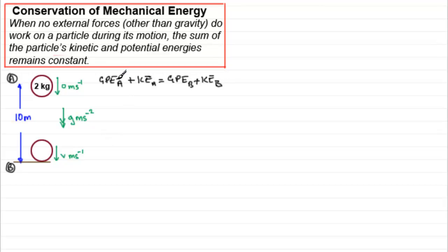So what we can do then is say, what kind of gravitational potential energy does the particle possess at A? Well, if we take this as our zero level, then it's going to be MGH. So the mass is 2, so therefore we're going to have 2 times the acceleration due to gravity, G, times the height, H, 10 meters, 2G times 10.